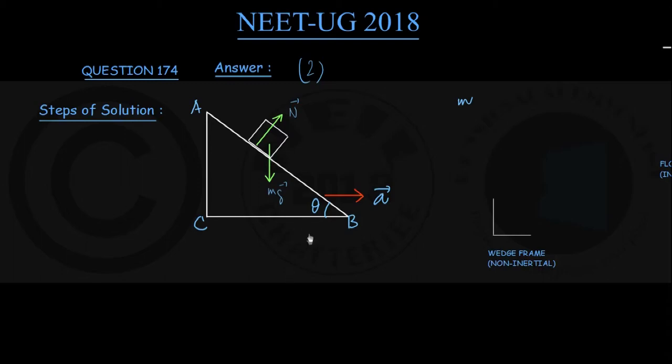So what is that pseudo force? If the mass of the block is small M, acceleration of the frame, that is wedge frame on which this block rests, is A towards the right. The pseudo force would have been, I am showing you somewhere here. Remember this block is like a particle so I can show the force anywhere.